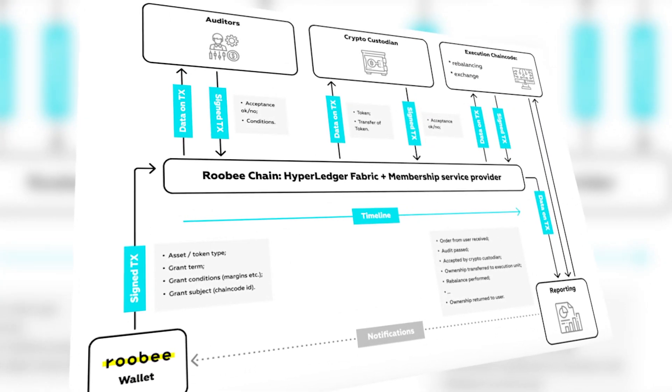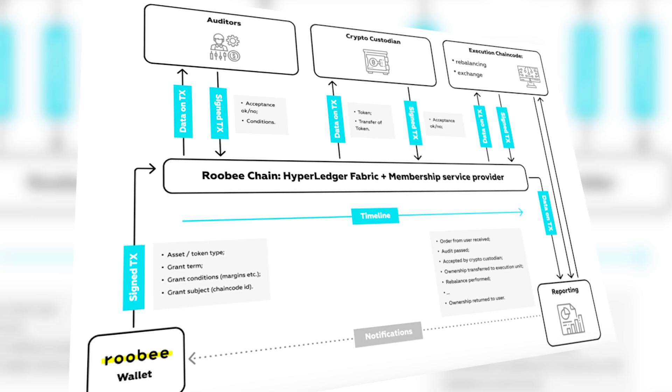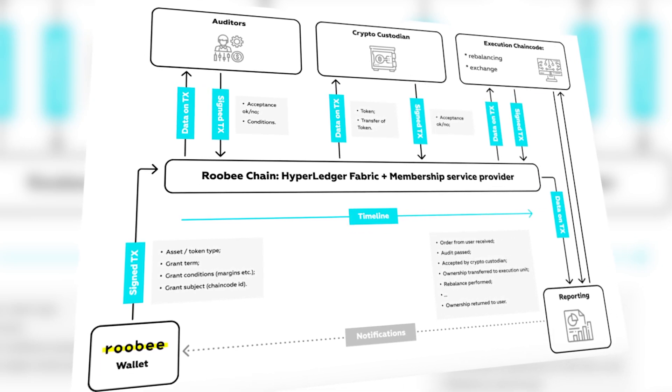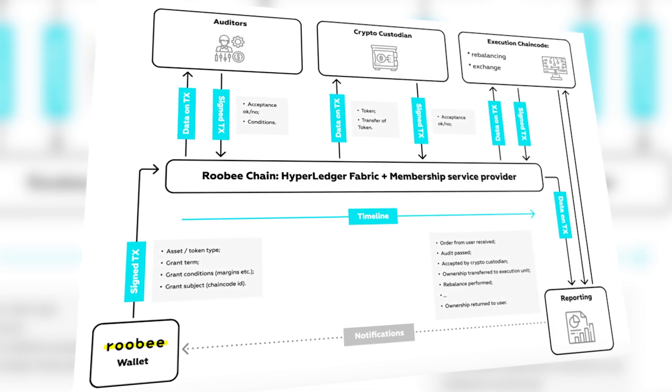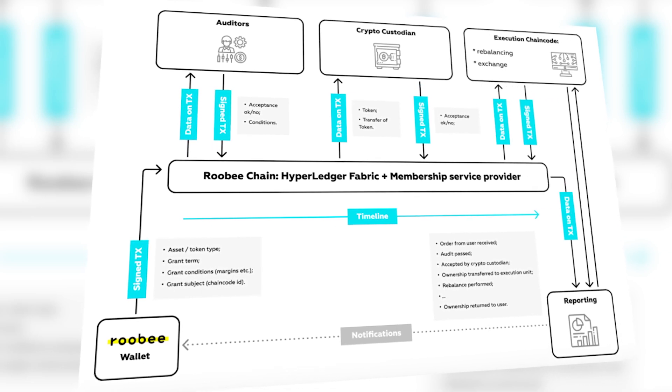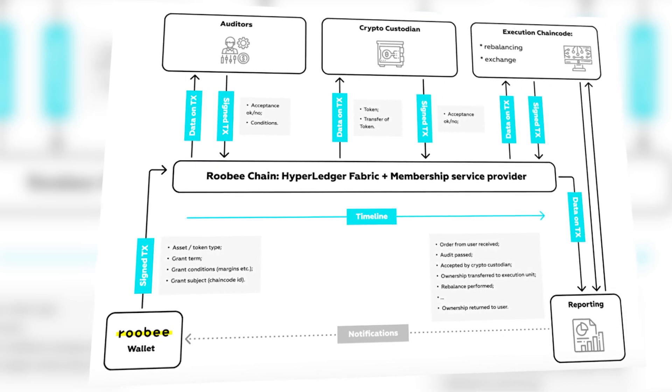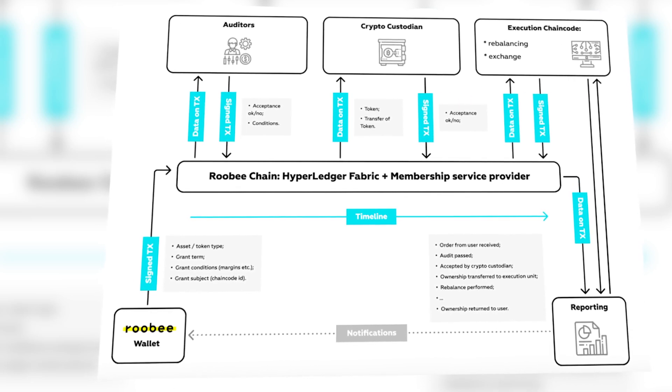It's important to note that Ruby tokens will be used exclusively for operating and obtaining functionality available to Ruby token holders within the platform. The platform user will be identified as the owner of the Ruby token by adding and confirming external addresses of the Ruby token, storing the Ruby token in their Ruby wallet, or transferring the Ruby token to various smart contracts.